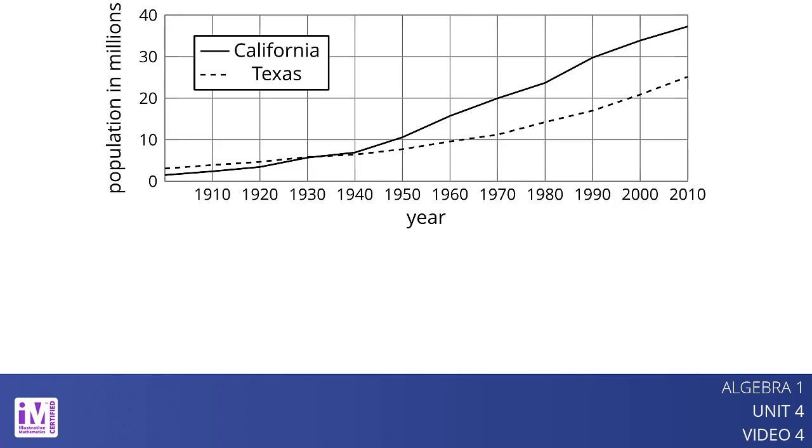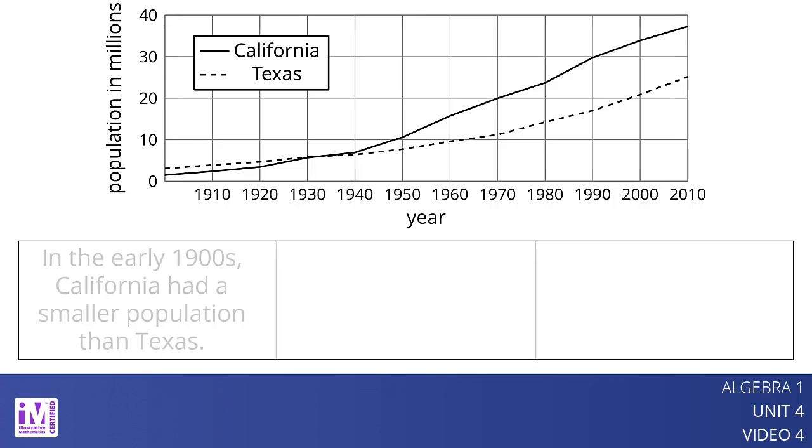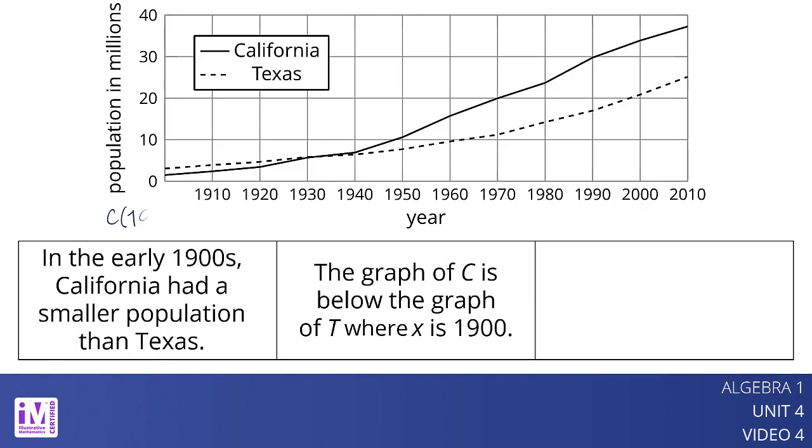What can we tell about the population? In the early 1900s, California had a smaller population than Texas. How can we tell? The graph of c is below the graph of t where x is 1900. How can we convey this with function notation? We convey this by writing c of 1900 is less than t of 1900.